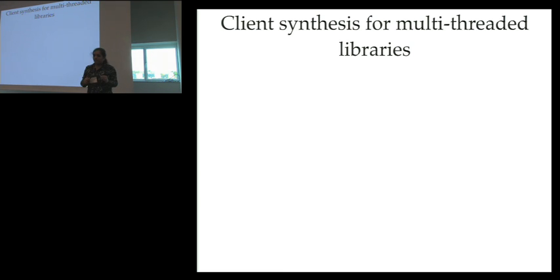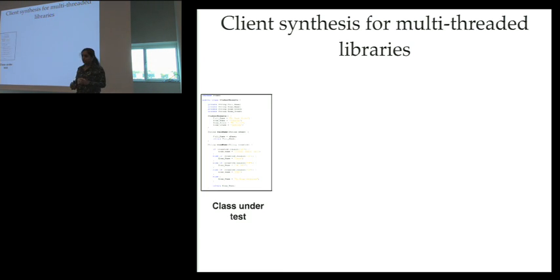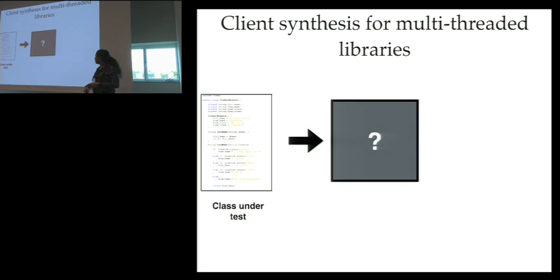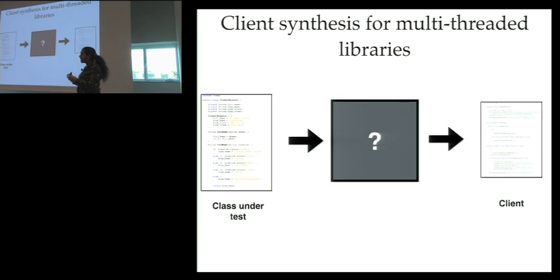Instead it would be great if we could just expect the developer to do what he is supposed to do and that is develop the class that he has promised. And we provide this as a input. Some black box which takes this class and provides a client which meets all the specification that we just discussed about. This would reduce the burden from the developer quite a bit and this is what we would like to do.